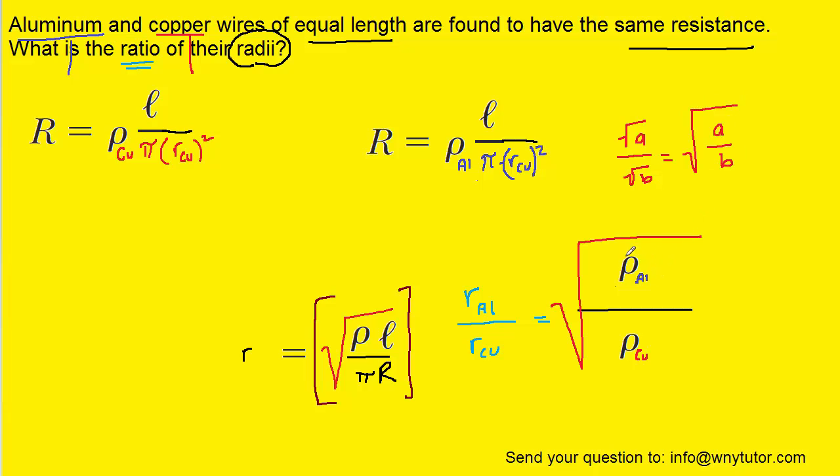Now these resistivity values simply have to be looked up in your textbook. There must be a chart in there somewhere that gives the values. For aluminum we have the value shown, and then copper the value shown.